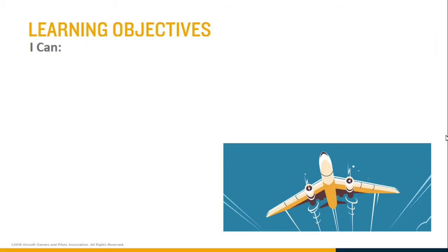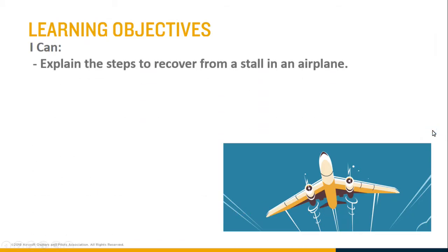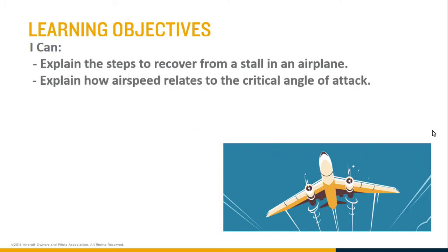We've gone over the steps to recover from a stall. Remember, the most important one is to reduce the angle of attack — that by itself will recover from the stall. But in order to lose as little altitude as possible, you also want to add throttle, maintain coordination with the rudder, and eventually raise the landing gear and flaps.